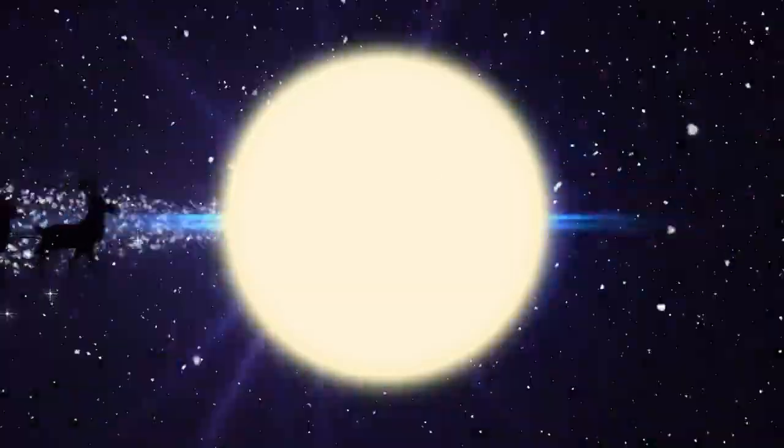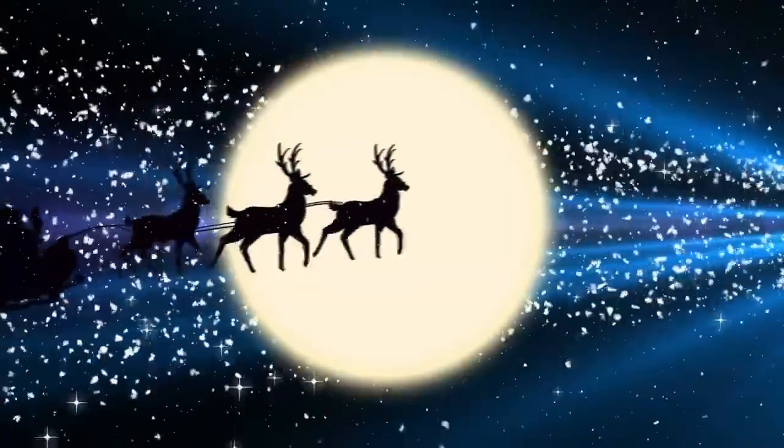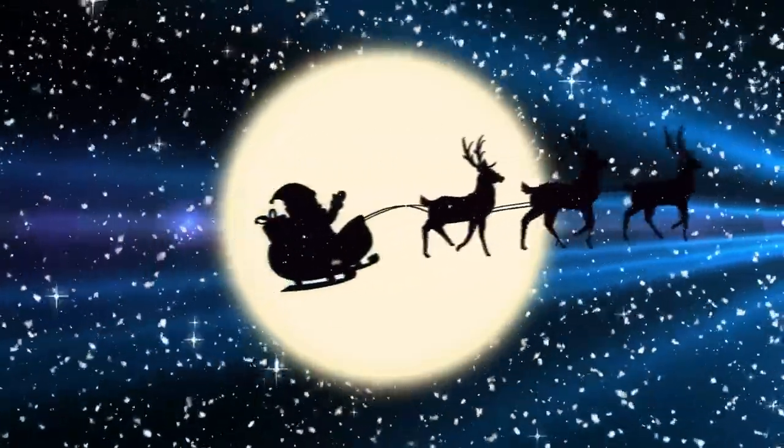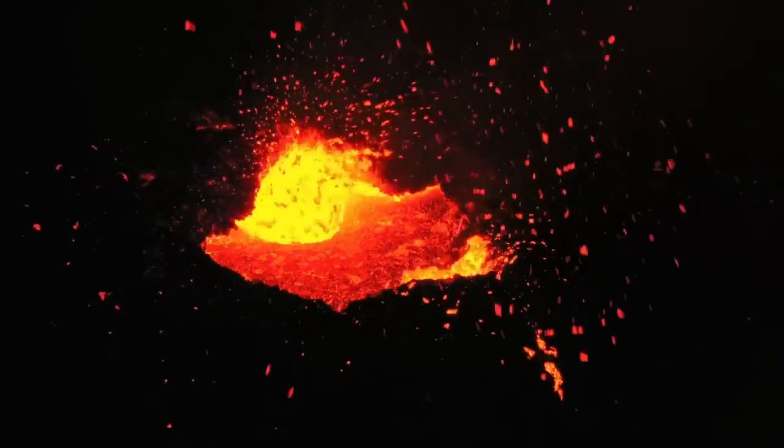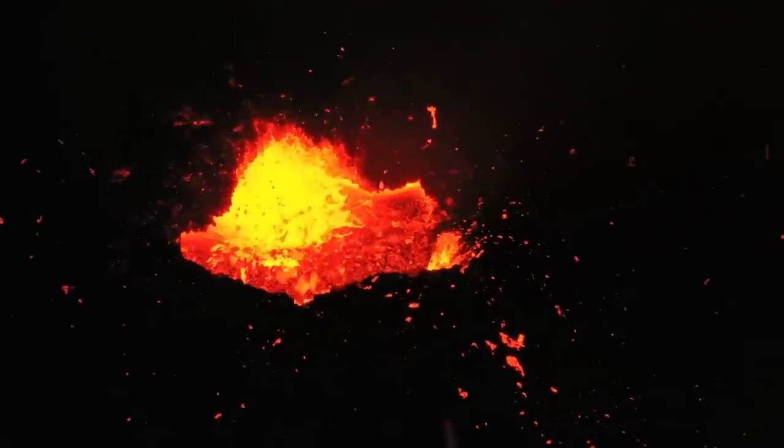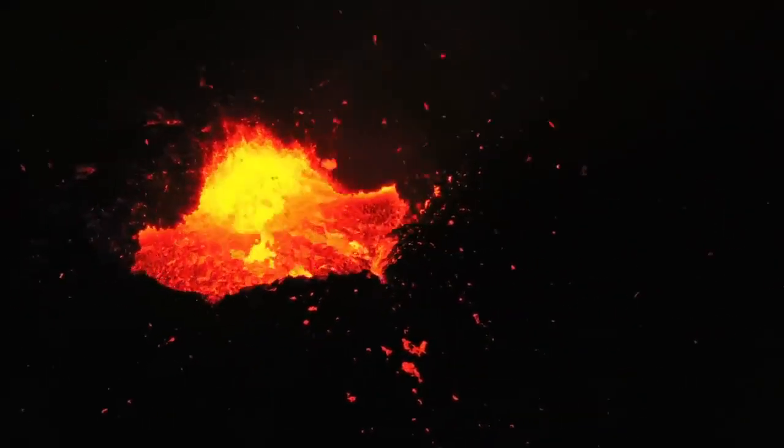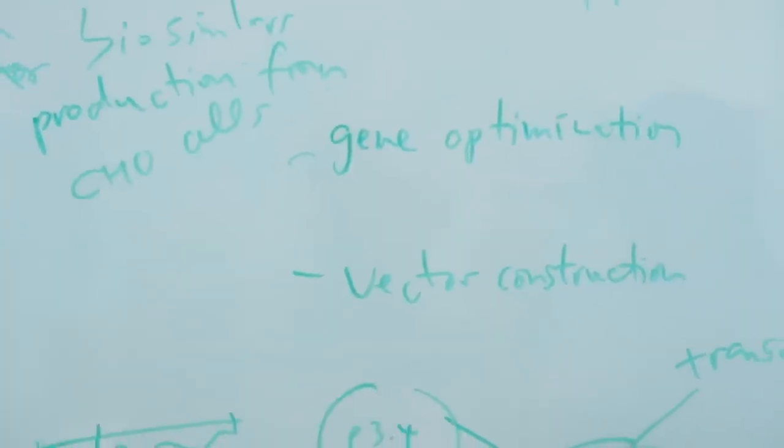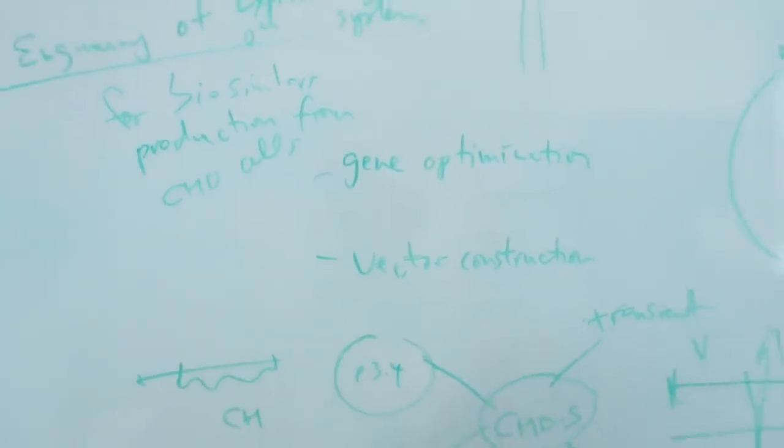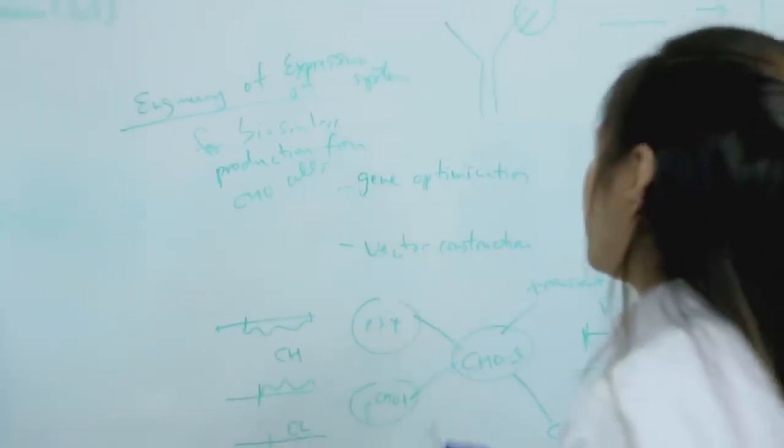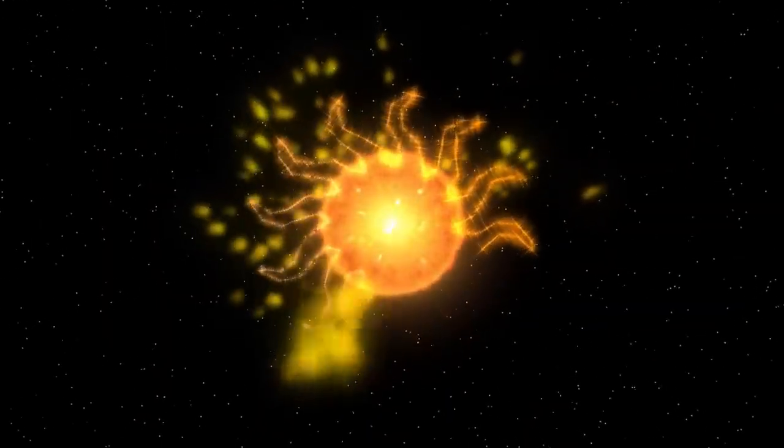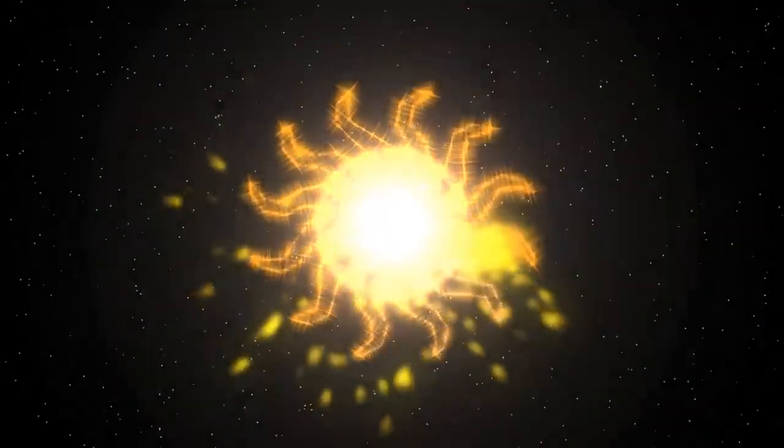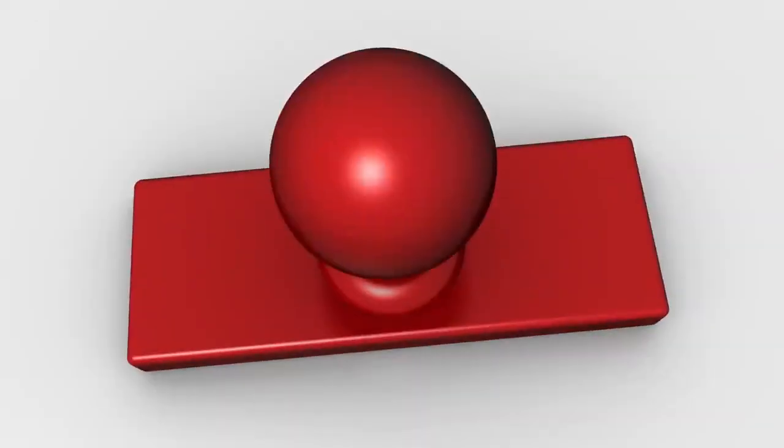Interestingly, historical records have noted that Betelgeuse's color has changed over time. Ancient Roman and Chinese texts suggest that about 2000 years ago, Betelgeuse appeared yellow. By the 9th century, Arabic astronomers observed its reddish tint, indicating that the star has undergone significant changes over millennia. This color shift is not just a curious historical detail, it offers important insight into the star's evolution and the dynamic processes at play.